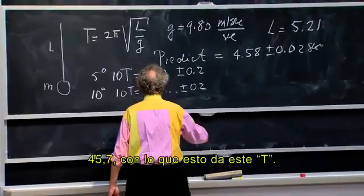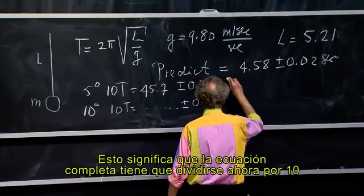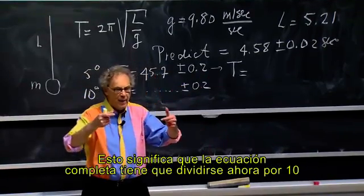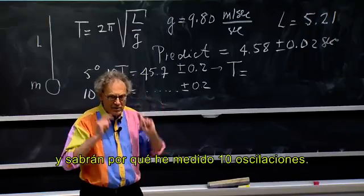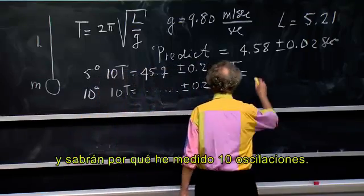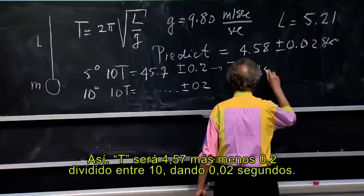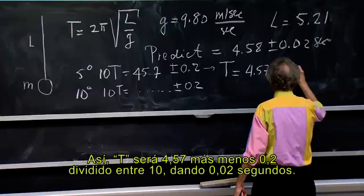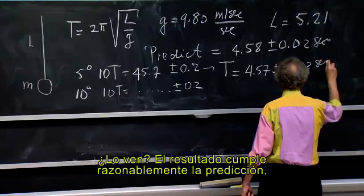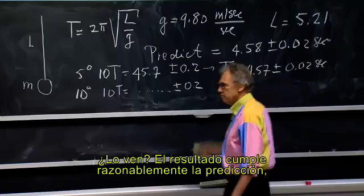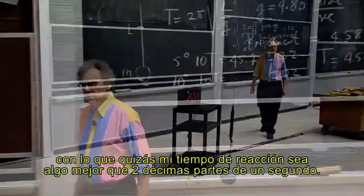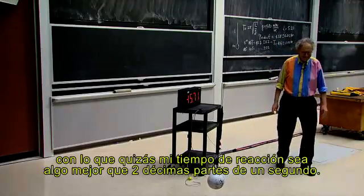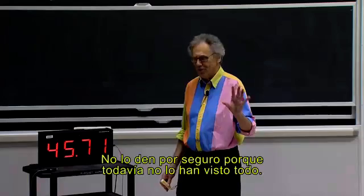45.7. So that becomes ten T. That means this whole equation has to be divided by ten — and now you see why I measure ten oscillations. T is going to be 4.57 plus or minus 0.2 divided by 10, that is plus or minus 0.02 seconds. Comfortably within the prediction. Maybe my reaction time is a little better than two tenths of a second — don't count on it because you haven't seen the rest yet.